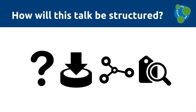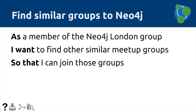The first thing when modeling is: what question are we trying to answer? This might be derived from someone on the commercial side, a business person, or the subject matter expert. In this case, we start with something simple: I'm a member of the Neo4j London group, and I want to find some other similar groups so I can join those. There were perhaps some things in the Neo4j London group that I liked, and I want to find similar ones. We're right at the beginning — in the question stage.